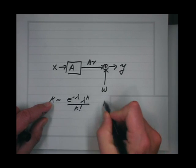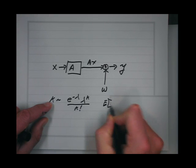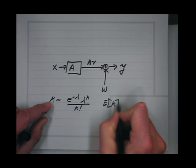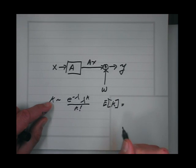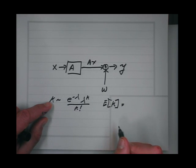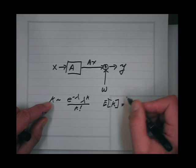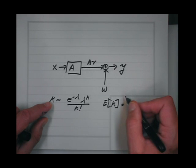This is a positive discrete random variable. The expected value of k is lambda.